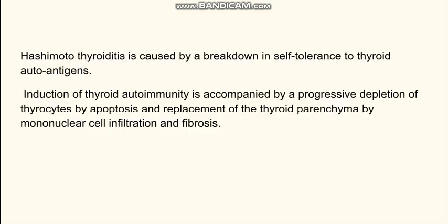Hashimoto's thyroiditis is caused firstly by the breakdown of self-tolerance to thyroid autoantigens. Then the various mechanisms — that is the CD4 cells, CD8 cells, and the plasma cells — cause thyrocyte injury by apoptosis. When the cells die, the remaining thyroid parenchyma is replaced by mononuclear cell infiltration, which includes mainly inflammatory cells, mostly lymphocytes, and fibrosis.